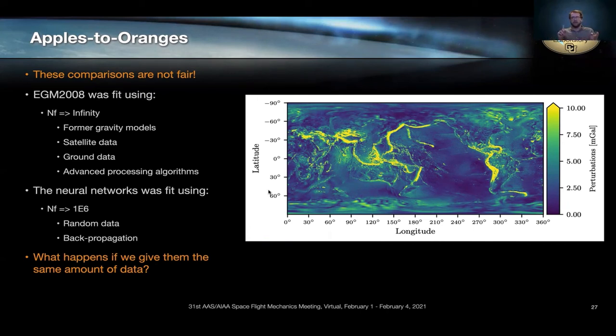And what I mean by that is it includes data from former gravity models, satellite data, ground-based measurements, and the fanciest processing algorithms to achieve a very high order fit. The neural networks in contrast are only trained on 1 million data points.